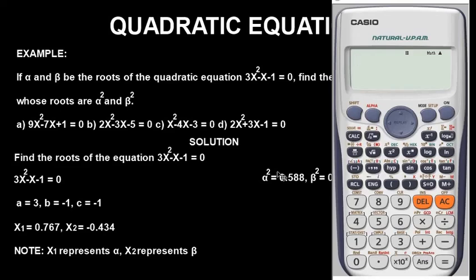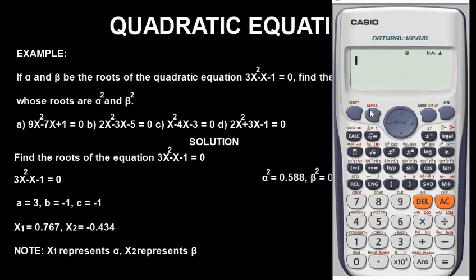Now let's get alpha squared. Press the Alpha button first, then press the key labelled A — which is stored as alpha in the calculator — then press the square button and press equals. The value of alpha squared is 0.588. Now let's find beta squared: press the Beta key, then press square and equals. We get 0.188.